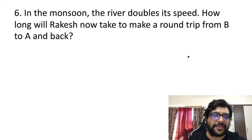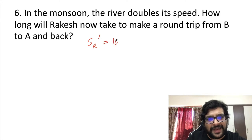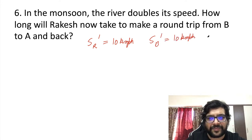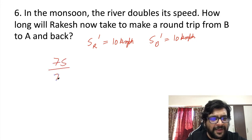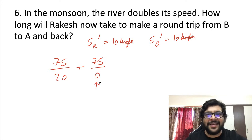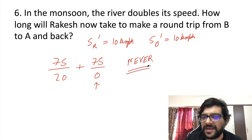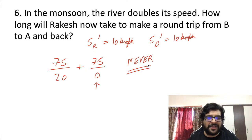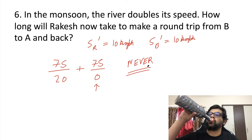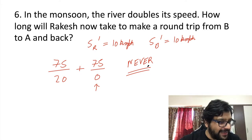In the monsoon with river speed = 10 km/h, Rakesh's boat speed is also 10 km/h. Downstream he moves at 20 km/h. But going upstream, his speed = 10 − 10 = 0. The water pushes him back at the same rate he rows forward, so he will just stand still. He will never be able to come back.